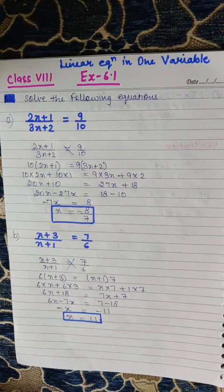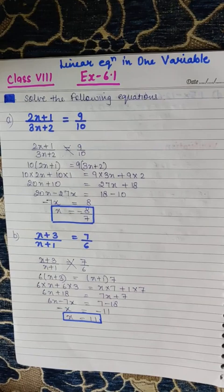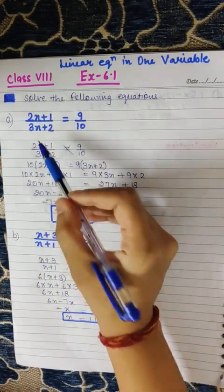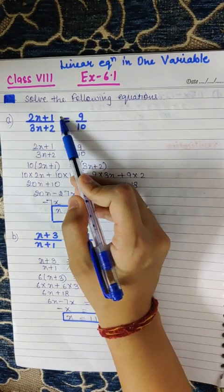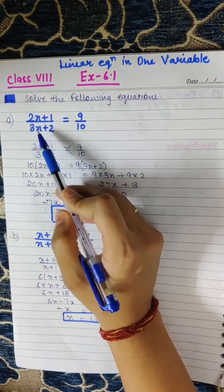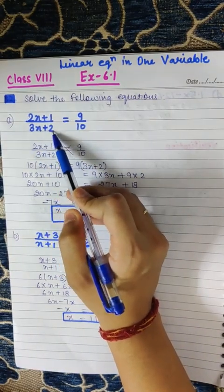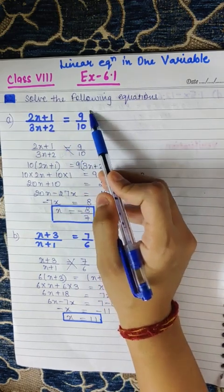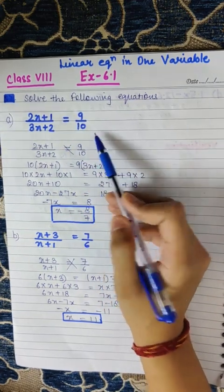Good morning. Today we will discuss some questions from exercise 6.1. Question number 1: 2x plus 1 divided by 3x plus 2 is equal to 9 by 10.